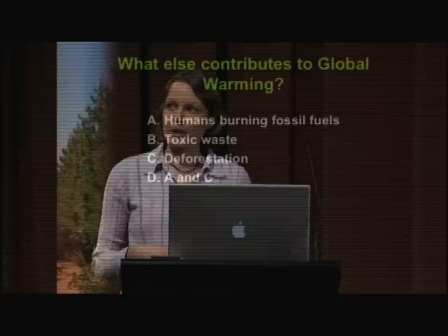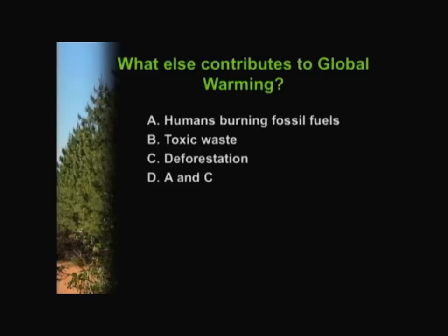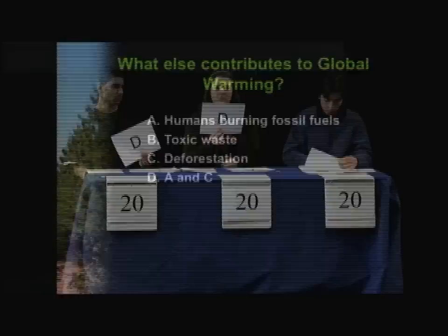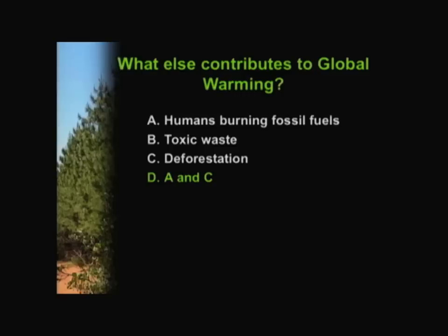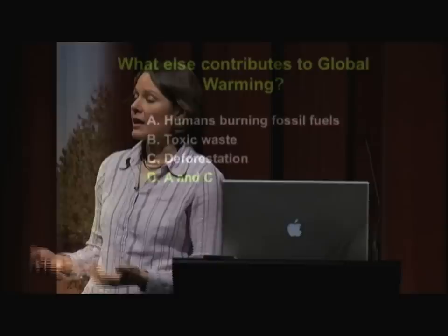There's something else that contributes to global warming. What else contributes? Is it A, humans burning fossil fuels; B, toxic waste; C, deforestation; or D, both A and C? Good job — D, the answer is both humans burning fossil fuels and deforestation. Deforestation is an example of land use change where we take a forest and convert it to something else, like an agricultural field or pasture. Removing those trees, sometimes burning them, releases a bunch of CO₂ into the atmosphere. Humans burning fossil fuels also releases CO₂ into the atmosphere. More CO₂ means more greenhouse gases, which means more warming.